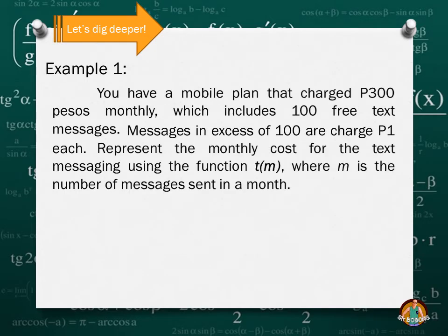Let's try this. Let's have this example. You have a mobile plan that charges 300 pesos monthly which includes 100 free text messages. Messages in excess of 100 are charged 1 peso each. So it means you have a monthly payment of 300 pesos. That 300 pesos includes 100 free text messages. But if within that month you exceed 100 text messages, the excess is charged 1 peso each. So represent the monthly cost for the text messaging using the function T(M) where M is the number of messages sent in a month. What is our domain? Our domain here is M, or the number of messages sent in a month.